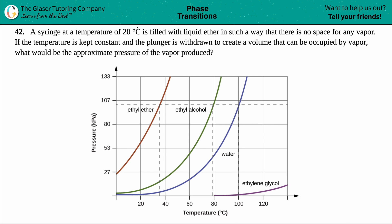Number 42. A syringe at a temperature of 20 degrees Celsius is filled with liquid ether in such a way that there is no space for any vapor. If the temperature is kept constant and the plunger is withdrawn to create a volume that can't be occupied by vapor, what would be the approximate pressure of the vapor produced?